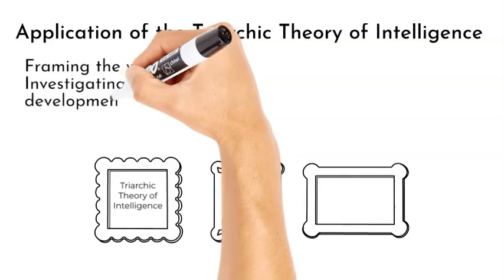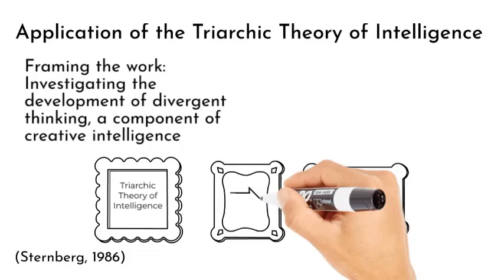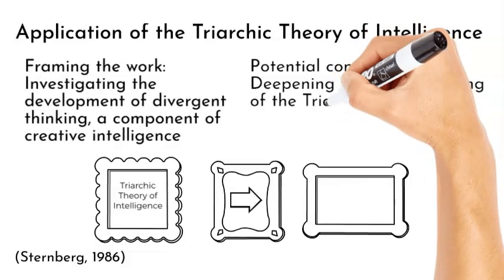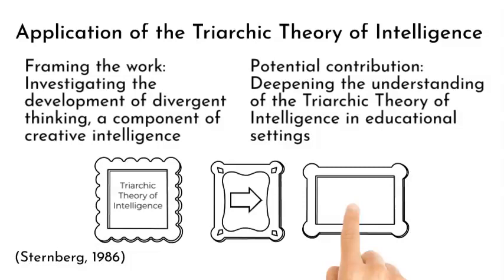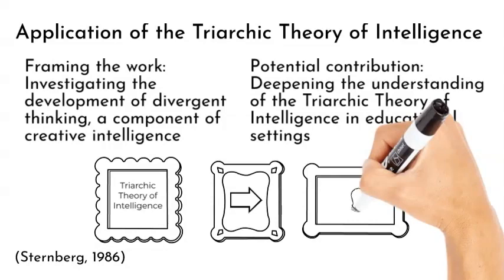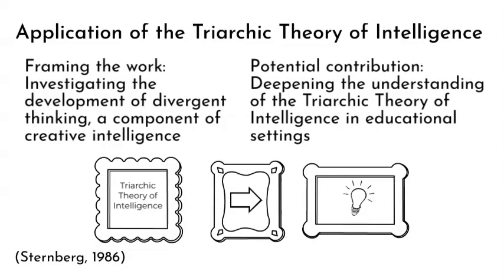This study's findings have the potential to contribute to a deeper understanding of the Triarchic Theory of Intelligence by conveying how a targeted divergent thinking instructional approach impacts the creative intelligence of gifted and talented students. By generating evidence-based instructional strategies to develop divergent thinking, this study could help validate and expand the applicability of the Triarchic Theory in educational contexts. The results may also inform further research on the interplay between the three components — analytical, creative, and practical intelligence — by demonstrating how nurturing one aspect, in this case creative intelligence, can contribute to the holistic development of gifted and talented students.